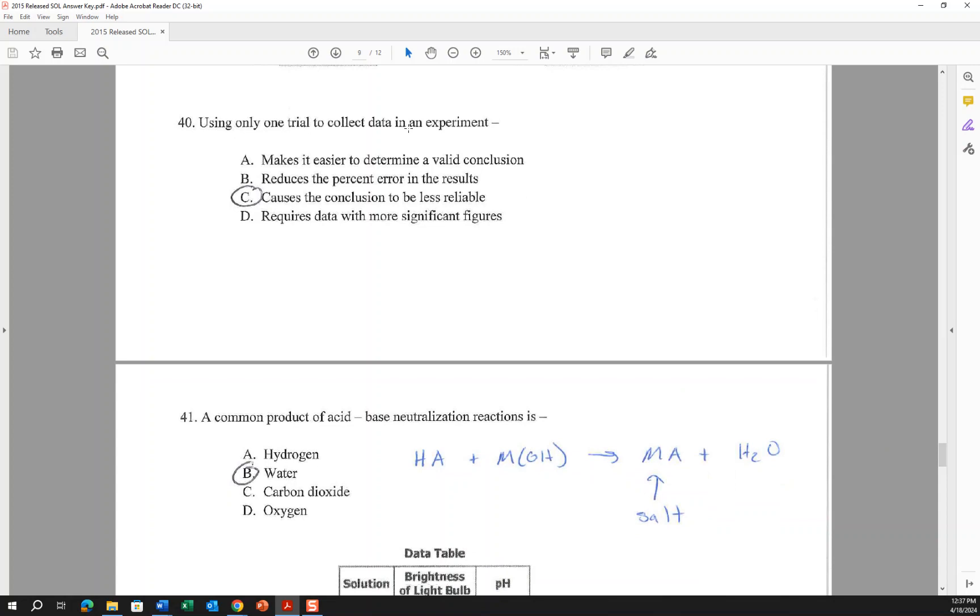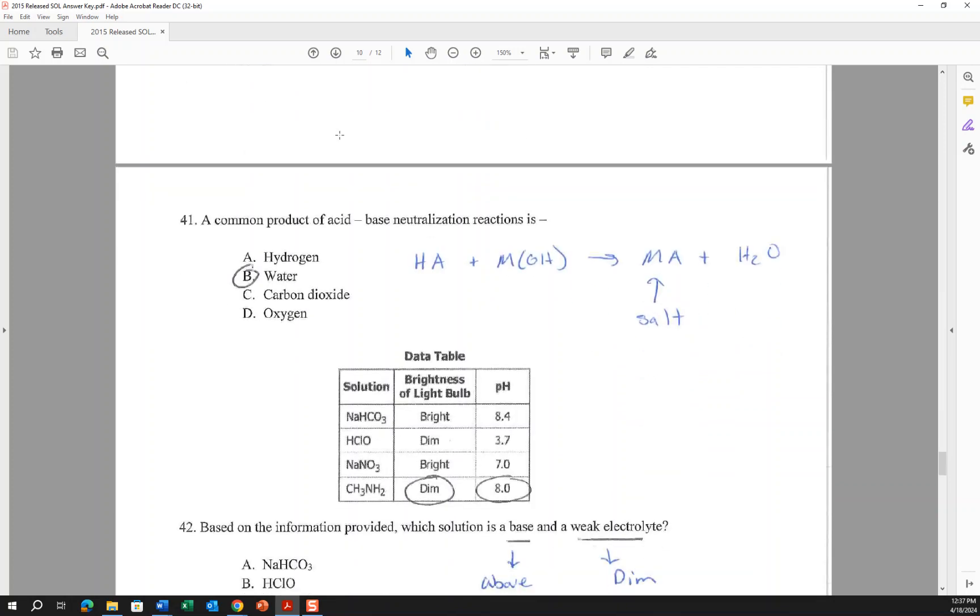Using only one trial to collect data in an experiment causes it to be less reliable because you have to repeat yourself to know that you're getting a consistent result. A common product of an acid-base neutralization reaction is usually a salt and water. So any acid, H+ paired up with an anion like chloride, fluoride, or sulfate like H2SO4, and a base is usually a metal with hydroxide like sodium hydroxide or lithium hydroxide. It's basically just a double replacement reaction, so the metal would be paired up with the non-metal. If this were sodium and chloride, this would be sodium chloride, and H+ and OH- form H2O. Acids and bases always make an ionic compound, which is also known as a salt, and water.